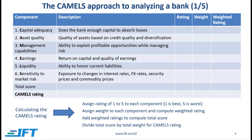To come up with the overall CAMELS rating, we need to assign a rating for each of these components. The rating is on a scale of 1 to 5, where 1 is best and 5 is worst. Just imagine that bankers like to play golf — in golf, a lower score is better, and we have the same logic here. Over the next few slides, we'll talk about how to evaluate these components, but to illustrate this table, let's just assign some ratings.